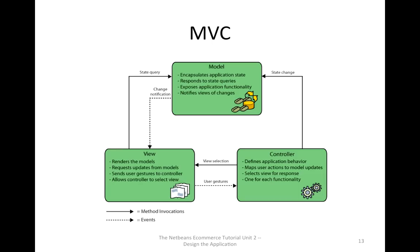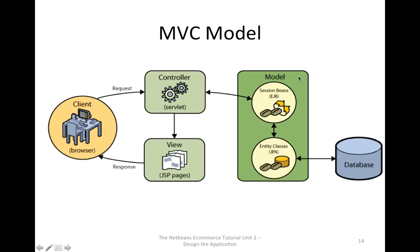This picture explains the MVC model — the relationship between model, view, and controller. Here is the MVC model for this application. The client, the customer through the web browser, sends a request to the servlet, which is the controller. The controller, based on the user's request, asks for information from the model — the session bean EJB — which interacts with entity classes that directly persist to the database. Based on those results and the user's request, the controller decides which view and what data will be presented to the client. In this model, business logic and presentation are separated, making it easy to maintain and write.